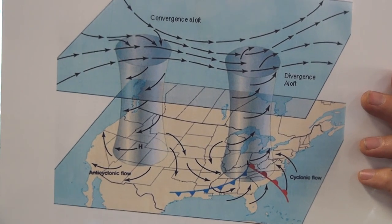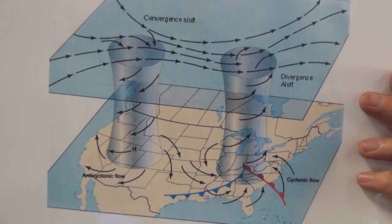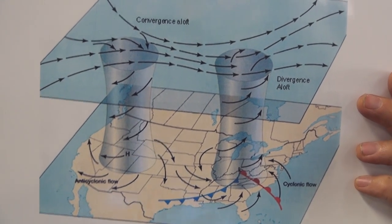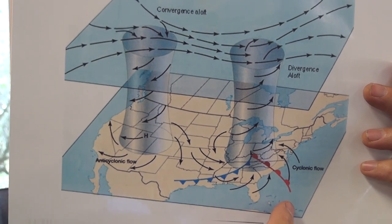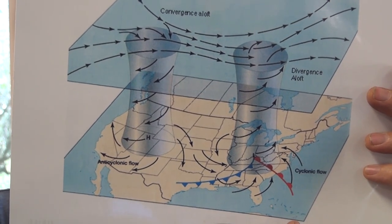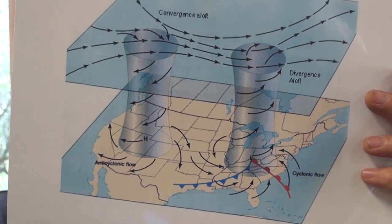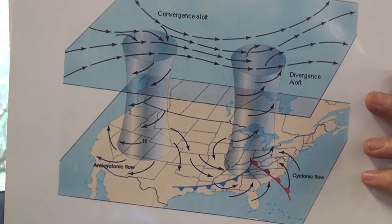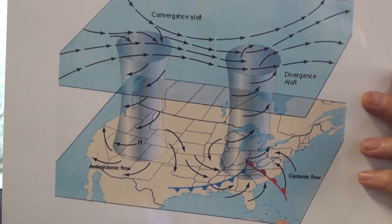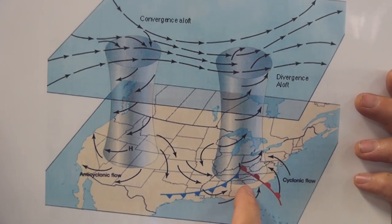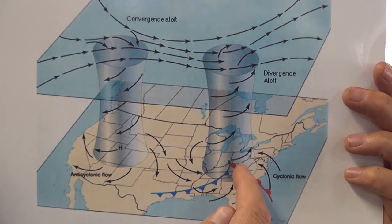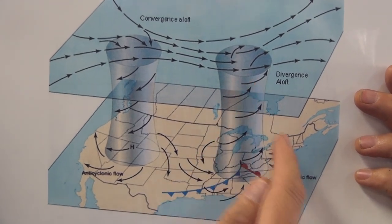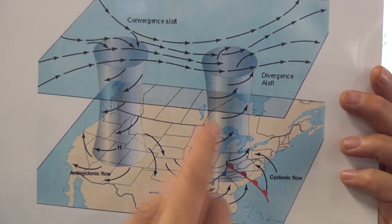All right, I wanted to finish up with this diagram talking about low and high pressure. Over here to the right, you can see a warm front. It is symbolized in red. And a cold front that is symbolized with these blue triangles. And you can see that it does have a swirling motion. It's converging at the surface.